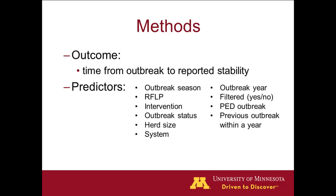The outcome is the time from the outbreak to when stability was reported in the MSHMP. Predictors include the main variable of interest — outbreak season — as well as the RFLP of the PRRS virus associated with the outbreak, the intervention used, outbreak status, herd size, the system, whether the farm was filtered or not, whether there was a PED outbreak during the stabilization period, and whether the farm had a previous outbreak within the prior year.